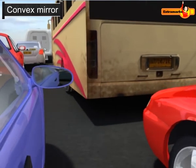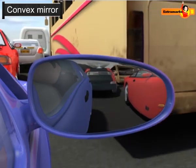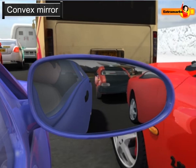Convex mirrors are used as rear-view mirrors in vehicles to see traffic at the rear side.